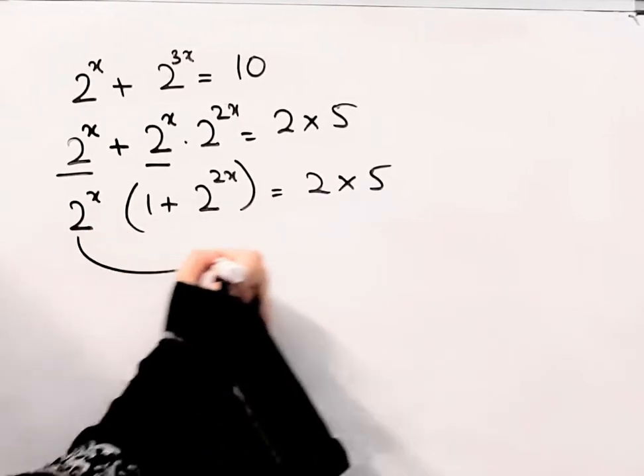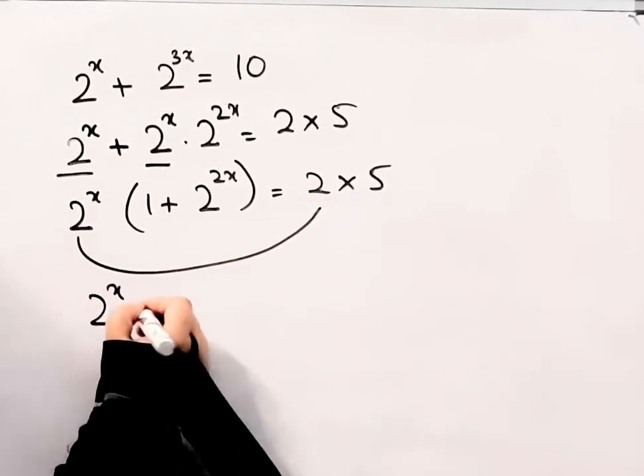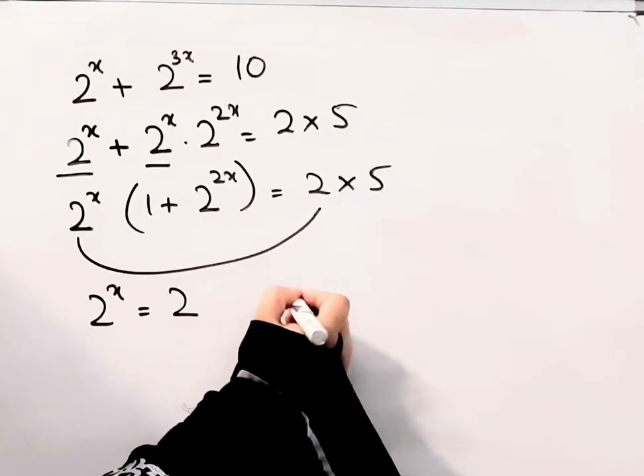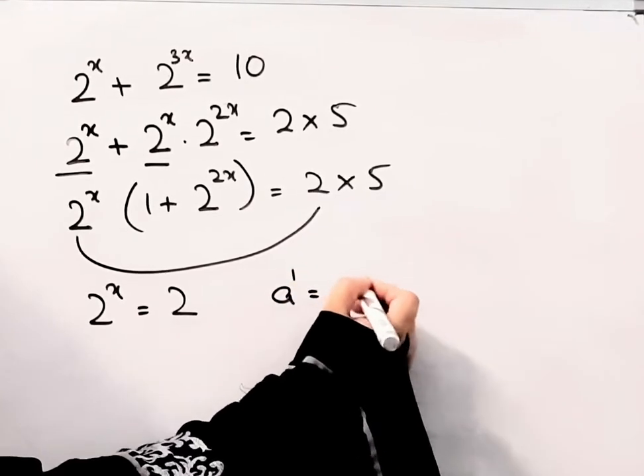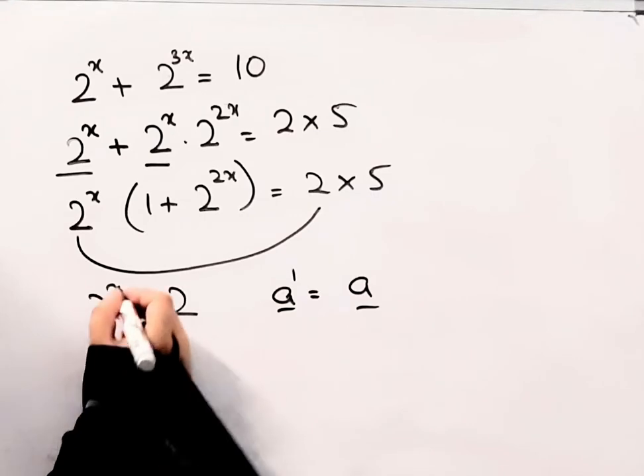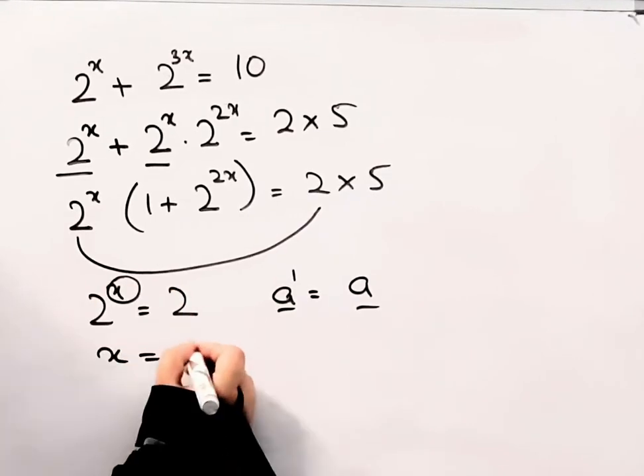From this we can conclude that 2 to the power x is equal to 2. And we know any number to the power 1 is equal to the number. That means here x is equal to 1.